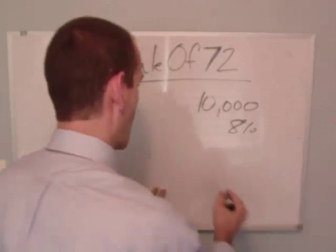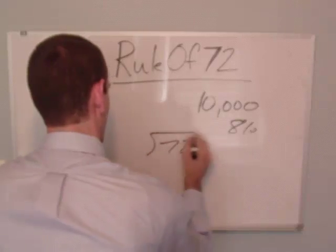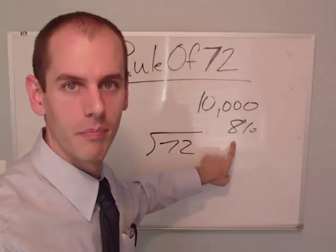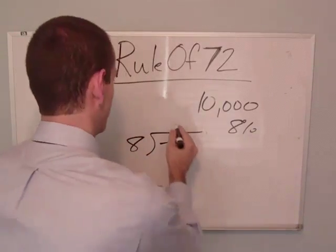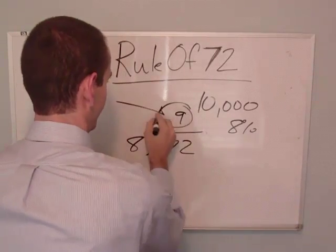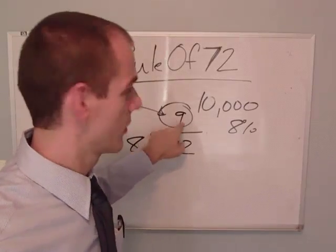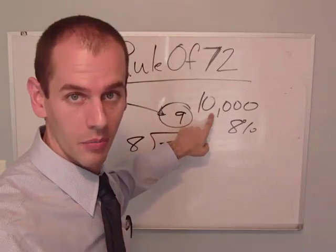Here's what you do. You take the number 72, you divide it by your interest rate. So here I've got 9. It's going to take 9 years for this $10,000 to become $20,000.